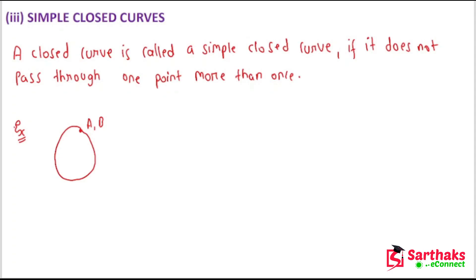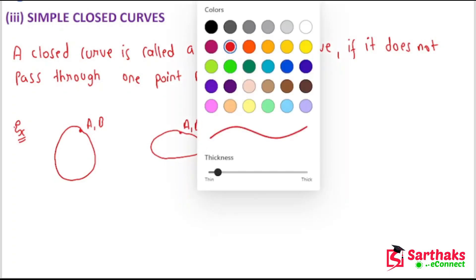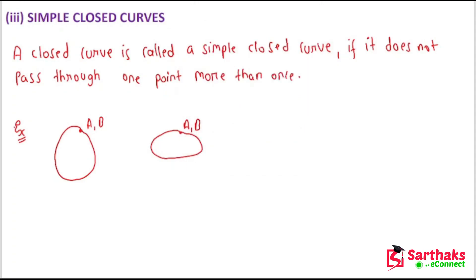A circle is a simple closed curve because it is not passing through any point more than once — A is the starting point and A is the ending point; it is not passing through any point more than once. Similarly, an ellipse is also a simple closed curve. These are examples of simple closed curves.